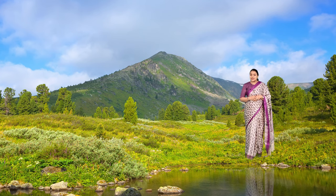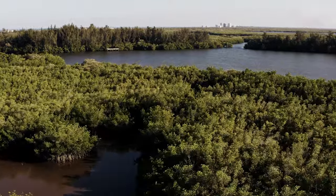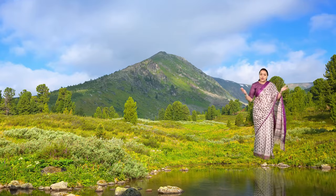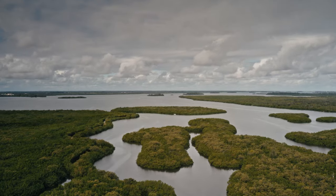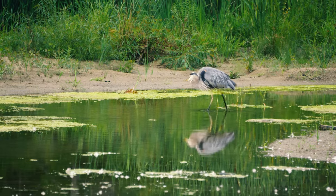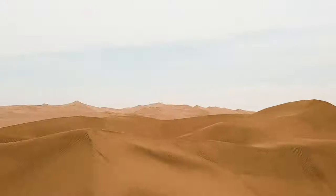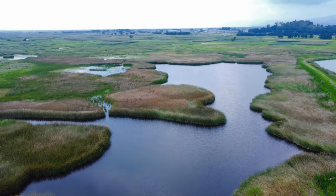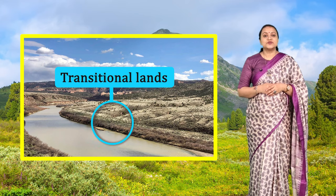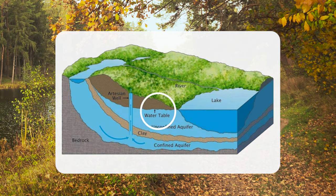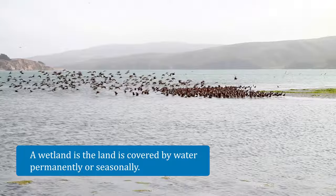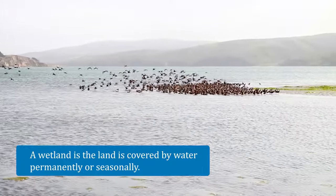Did you notice? In fact, there is something common between them. They are all wetlands. But what is a wetland? Let us explore that. Just like a forest or a desert, a wetland is also a type of ecosystem. They are the transitional lands between terrestrial and aquatic ecosystems, where the water table is usually at or near the earth's surface. In other words, a wetland is the land which is covered by water permanently or seasonally.